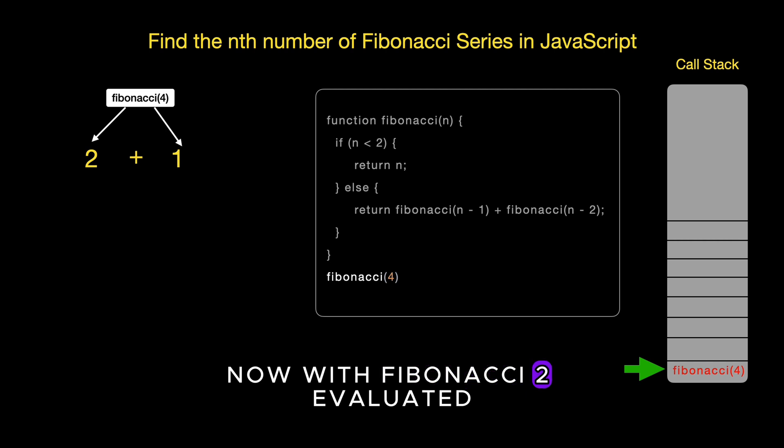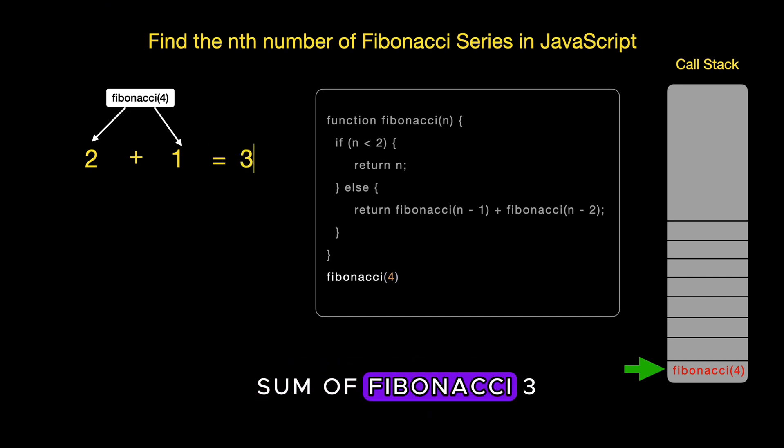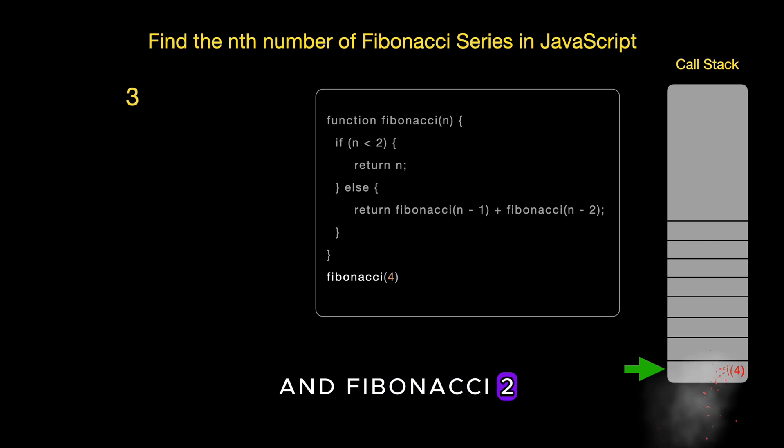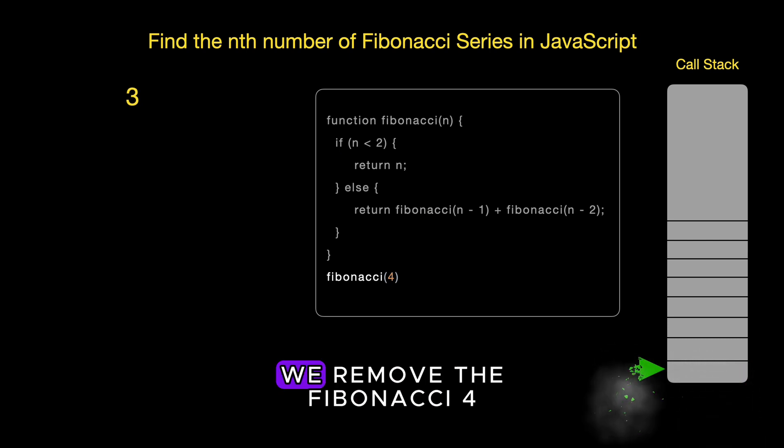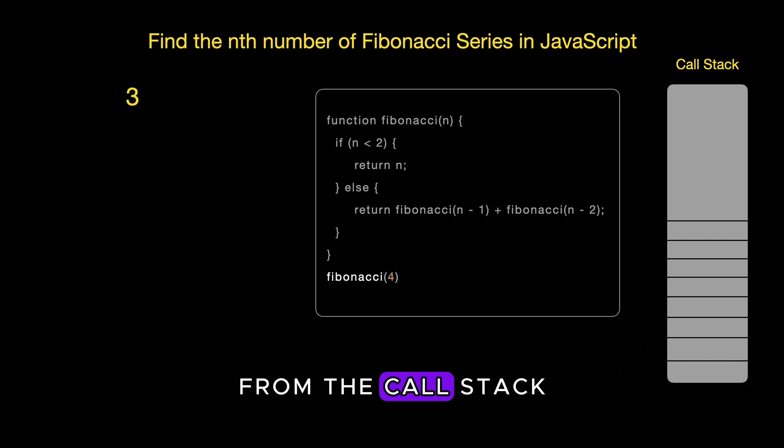Now, with Fibonacci 2 evaluated, we can proceed to complete the calculation of Fibonacci 4. As previously mentioned, Fibonacci 4 is the sum of Fibonacci 3 and Fibonacci 2, which is 3. And we removed the Fibonacci 4 from the call stack.